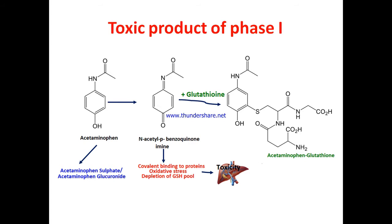Acetaminophen is a painkiller that is detoxified by conversion into acetaminophen sulfate or acetaminophen glucuronide, which are excreted. However, sometimes an intermediate product is formed — N-acetyl-p-benzoquinone imine (NAPQI) — produced in the liver by phase one biotransformation. NAPQI covalently binds to proteins, causes oxidative stress, and depletes glutathione (GSH), resulting in hepatic toxicity. NAPQI can combine with glutathione to form acetaminophen-glutathione complex, which is then excreted. NAPQI is more toxic than acetaminophen itself.